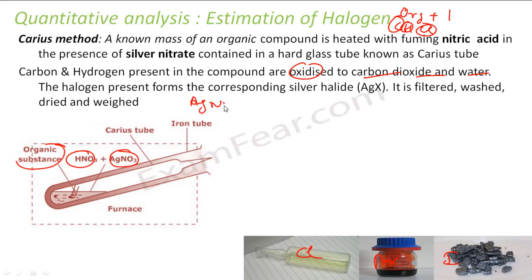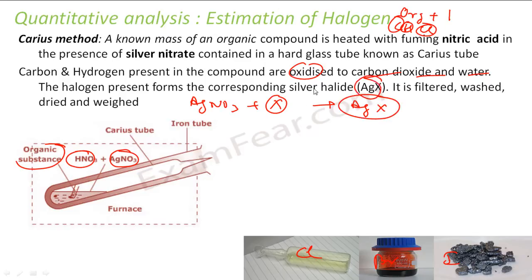AgNO3 reacts with any of the halogens, so it gives AgX — silver halide. You can easily filter it, wash it, dry it, and weigh it. So with AgX obtained, I can find the percentage of halogen.